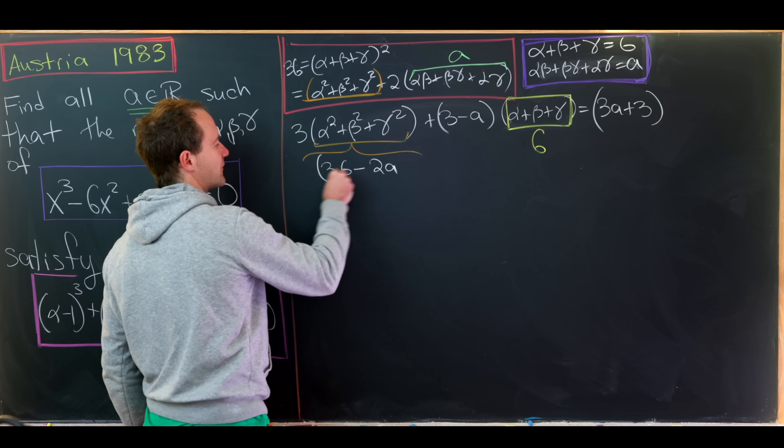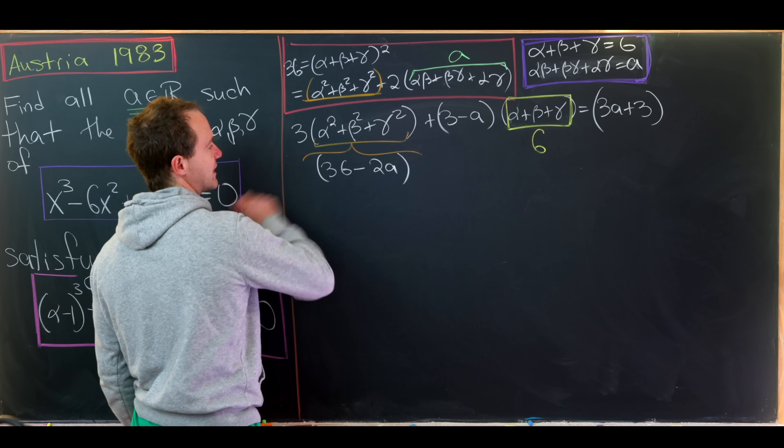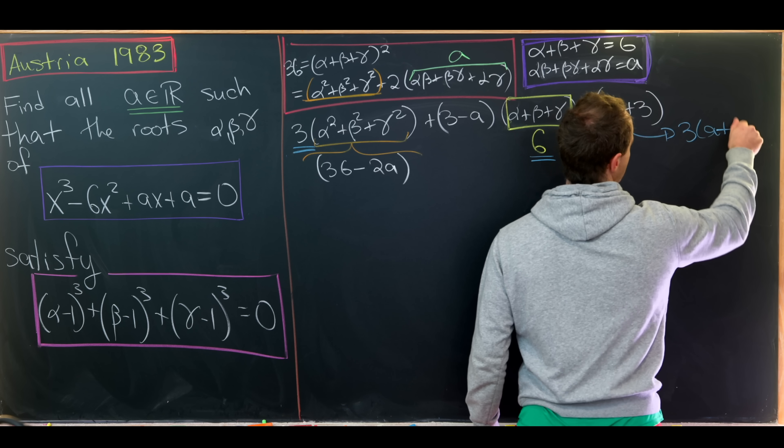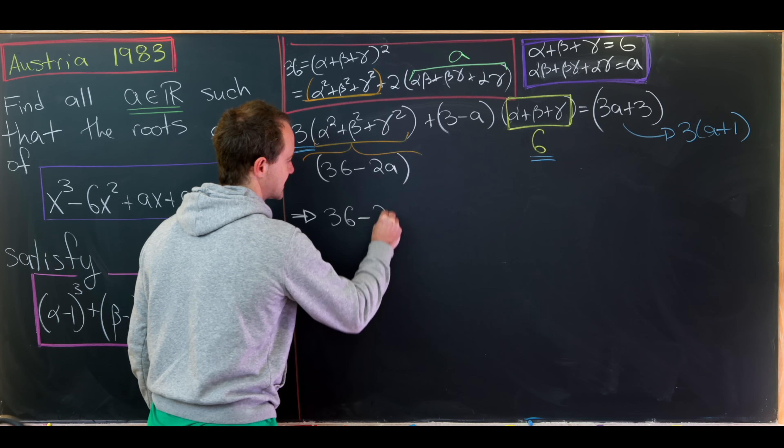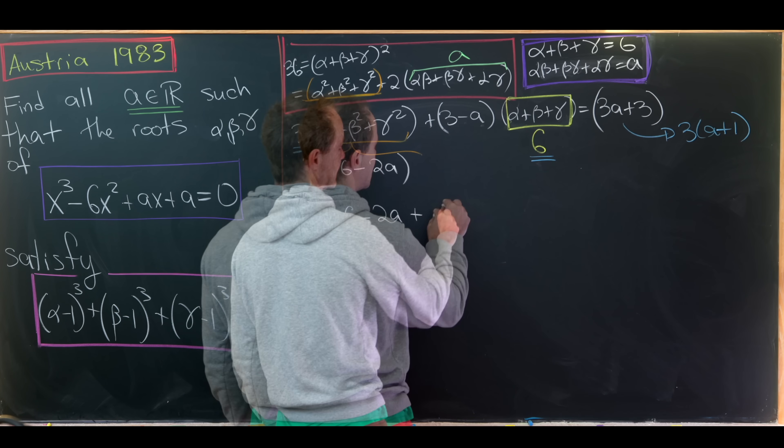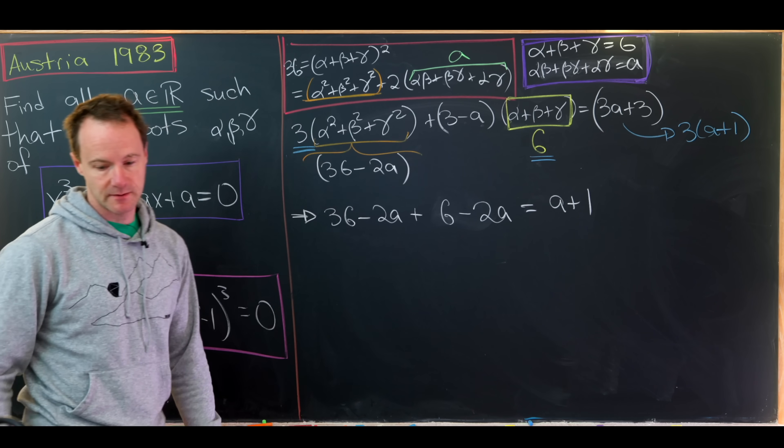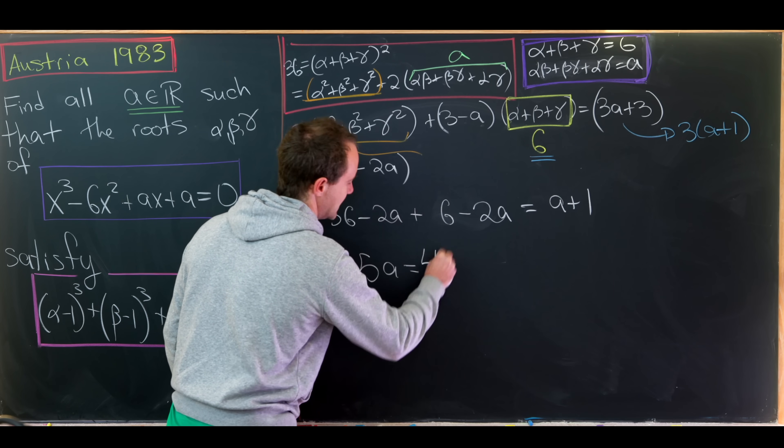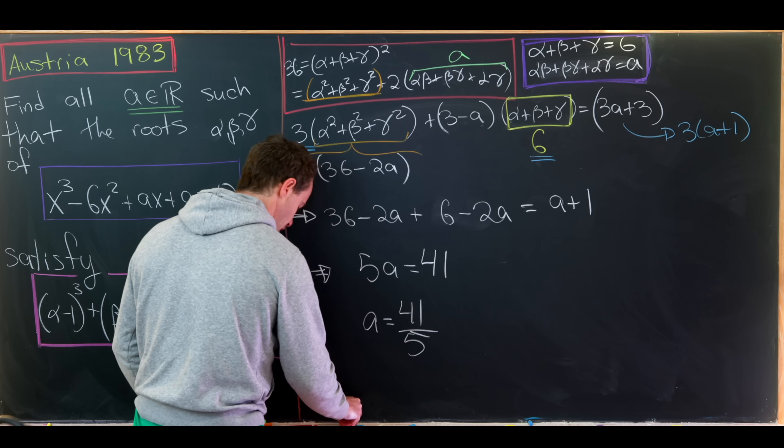So now from here, I'll note that everything in our equation has a multiple of 3 attached. Here we have 3, here we have 3 times 2, and here we have 3 times a plus 1. So we'll divide this entire equation by 3 just to simplify it a little bit. That's going to leave us with 36 minus 2a, plus now we'll have 3 minus a times 3 after dividing, that will give us 6 minus 2a, and then over here on the right-hand side, we'll have a plus 1. Now we'll collect all our a's on one side of the equation and everything else on the other side of the equation. That will give us 5a equals 41, which means we've got our value for a. It's this nice rational number 41 over 5.